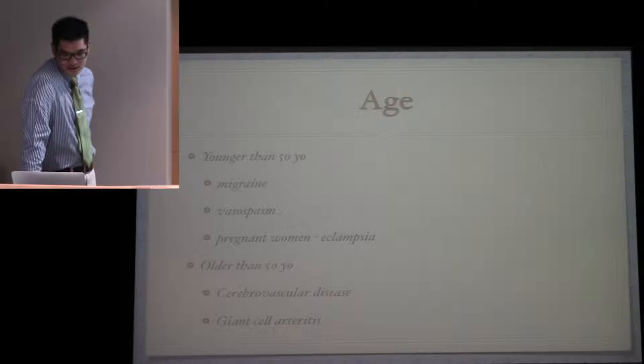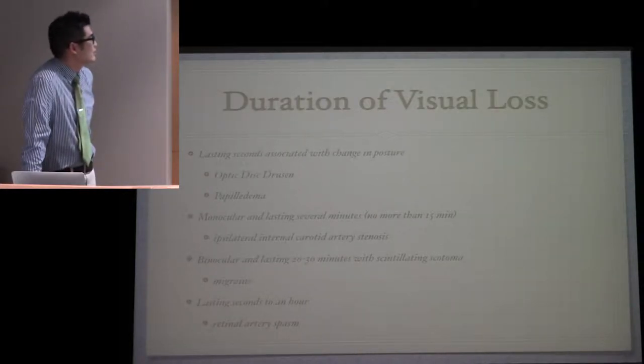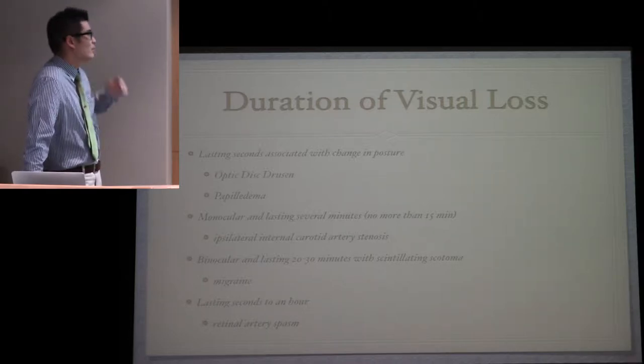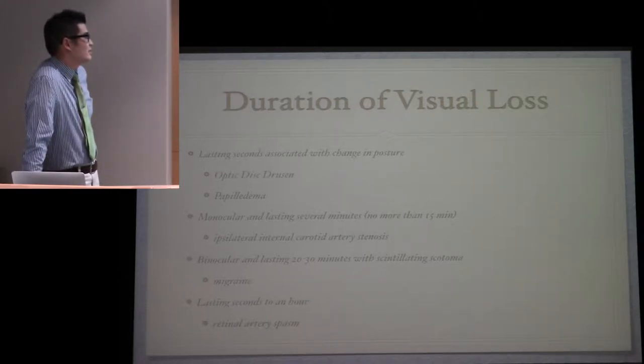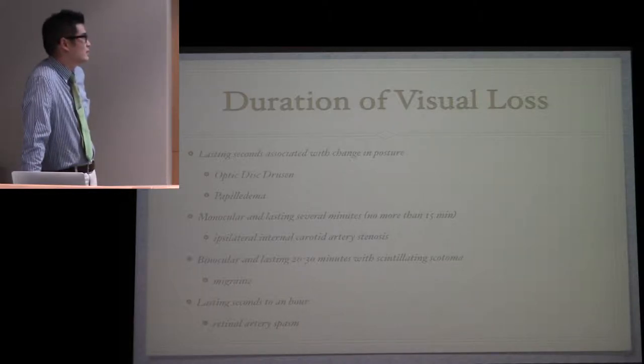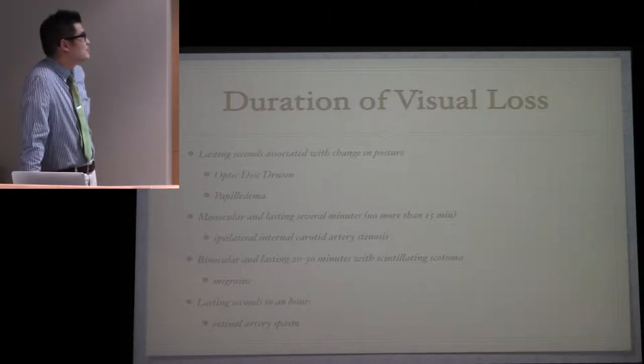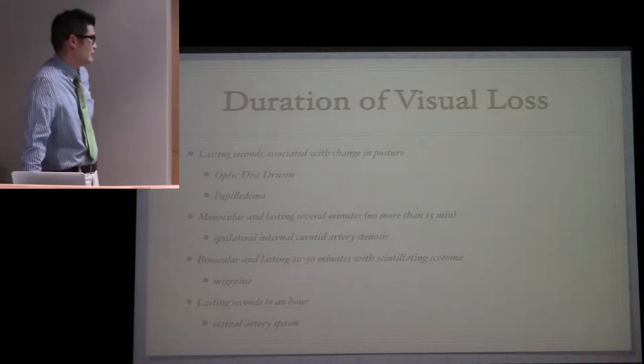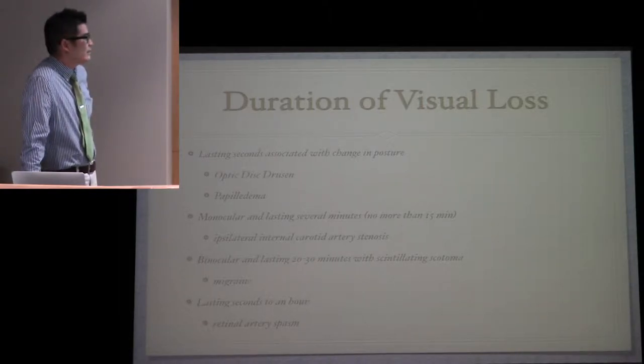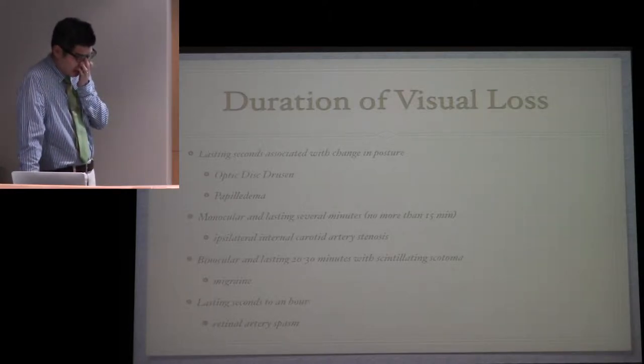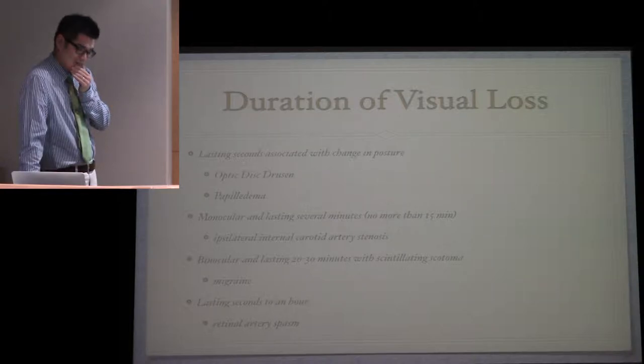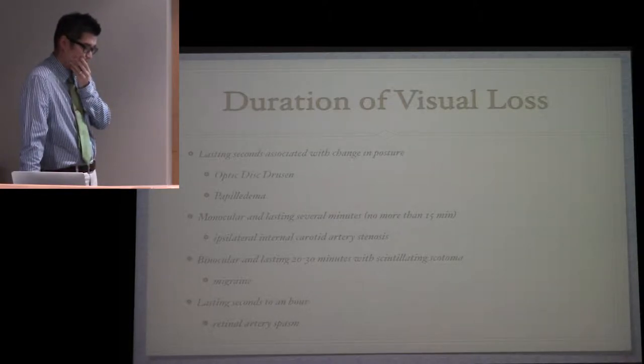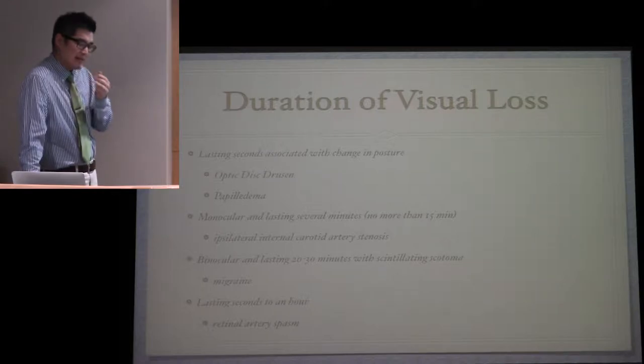Duration of vision loss is very important. If it's lasting seconds and associated with changes in posture, think about optic disc drusen or papilledema. If it's monocular lasting several minutes but no more than 15, think about ipsilateral internal carotid artery stenosis. If it's binocular lasting 20 to 30 minutes with scintillating scotomas, everyone would think about migraines. However, retinal artery spasm can last from seconds to an hour as well.